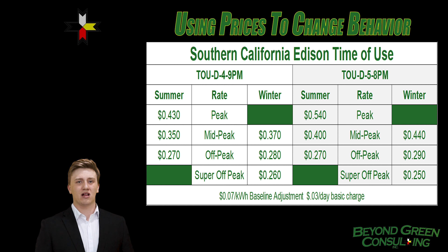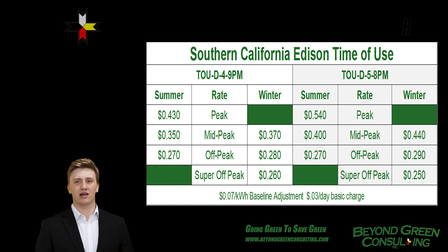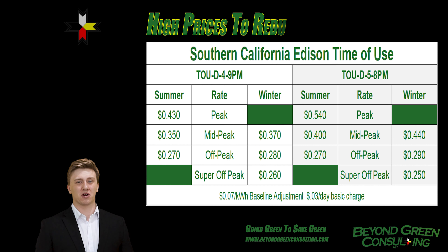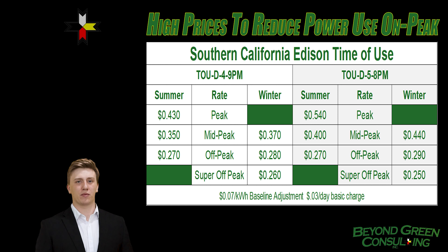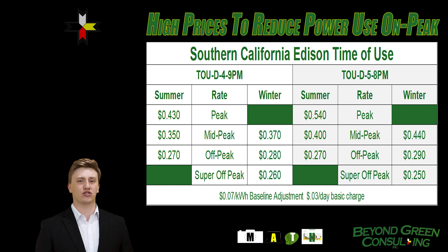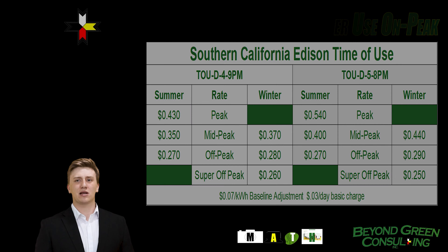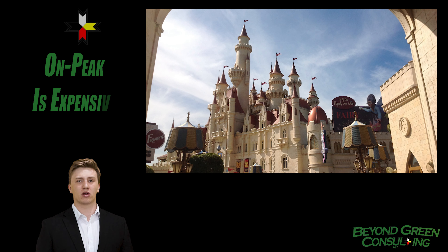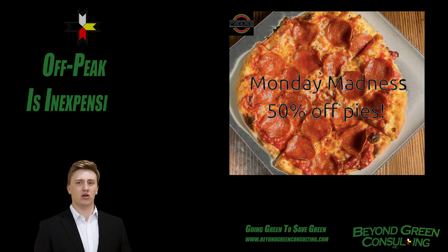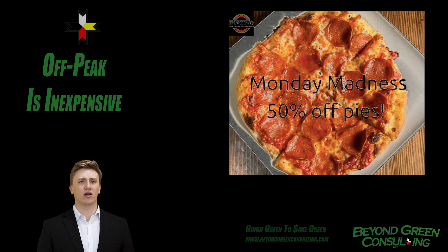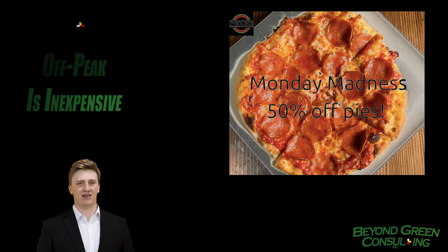If you use power off-peak, like only washing your clothes on the weekend, it is cheaper. Mid-peak pricing is regularly priced electricity. On-peak pricing is more expensive pricing to try to prevent everyone from using the electricity all at once. It's like buying a pizza at a fancy amusement park — if you're really, really hungry, you will pay $10 per slice on peak. But if you can wait, when you leave, you can get a full pizza with a coupon for $10 off-peak.